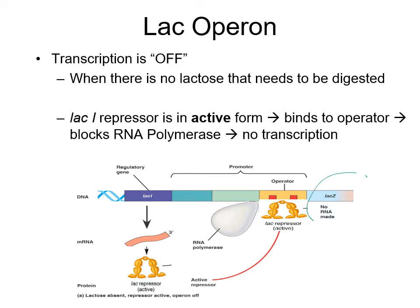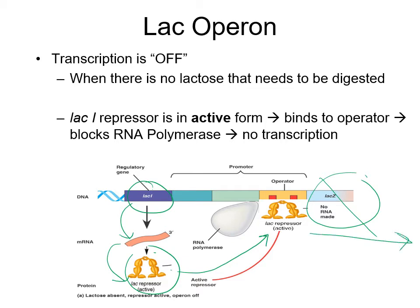Normally we'd want the lac genes to not be on because normally lactose isn't present. The bacteria is breaking down glucose and doesn't need to break down lactose. When there is no lactose, it does not want to transcribe the genes necessary to make the machines to break down lactose. So it is good that it is repressed — done by the lacI gene that makes mRNA, which makes the repressor protein. This repressor stops RNA polymerase from binding, so we get no transcription of the lactose-breakdown genes.